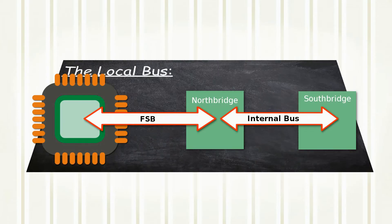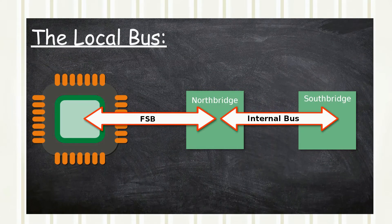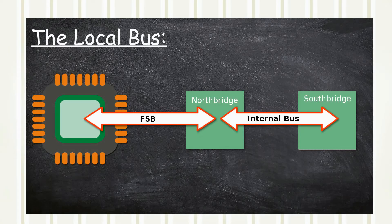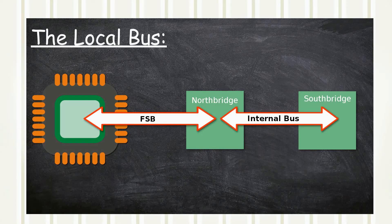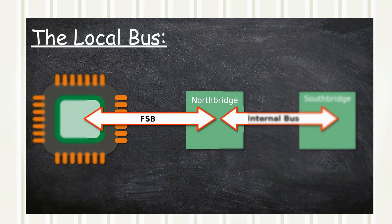By the mid-1980s, CPUs started to use the North Bridge and the South Bridge, also known as a chipset, to communicate with components. This arrangement gave certain components priority over others. The North Bridge was connected directly to the CPU by the front-side bus, also known as the FSB.